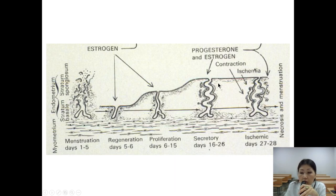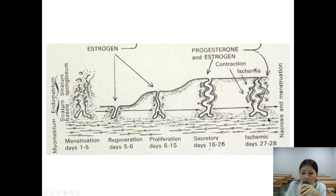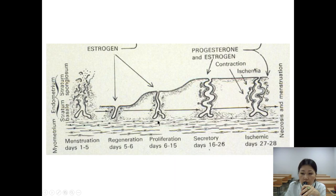The endometrium also becomes thicker and thicker during the secretory phase. During the ischemic phase, days 27 to 28, contraction, ischemia, and necrosis occur, and menstruation begins again from day one. This cycle continues for 28 days if fertilization does not occur.